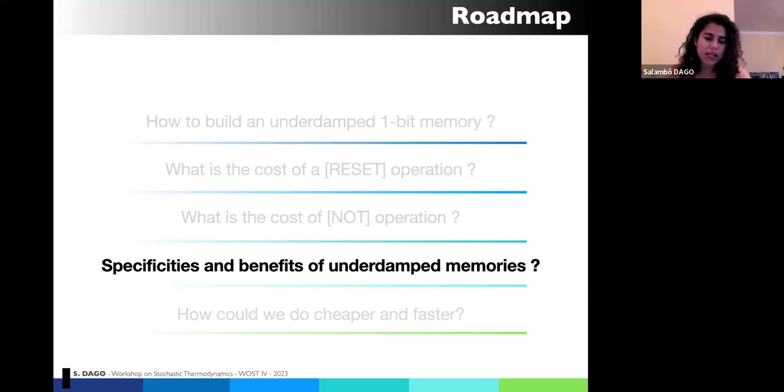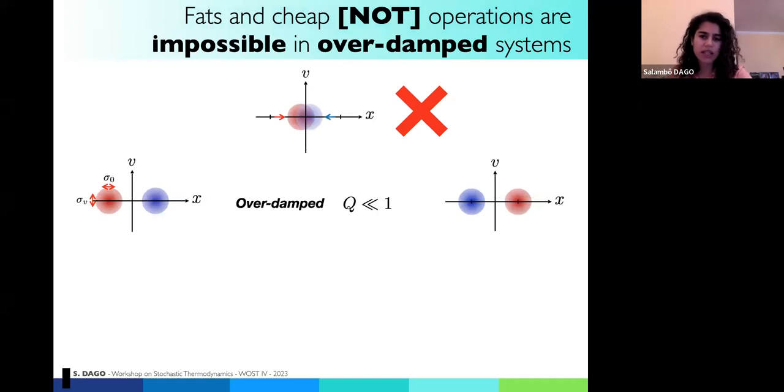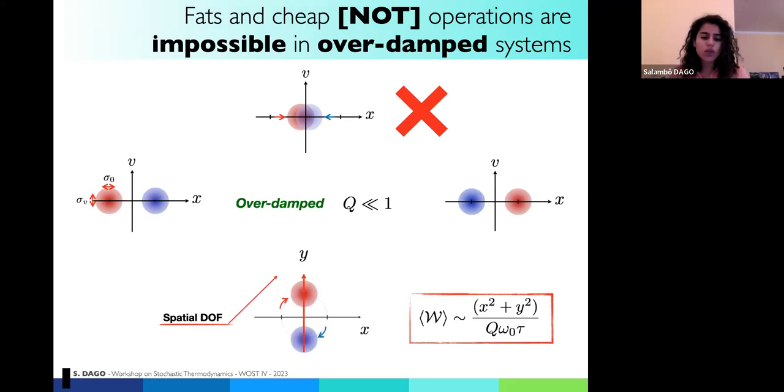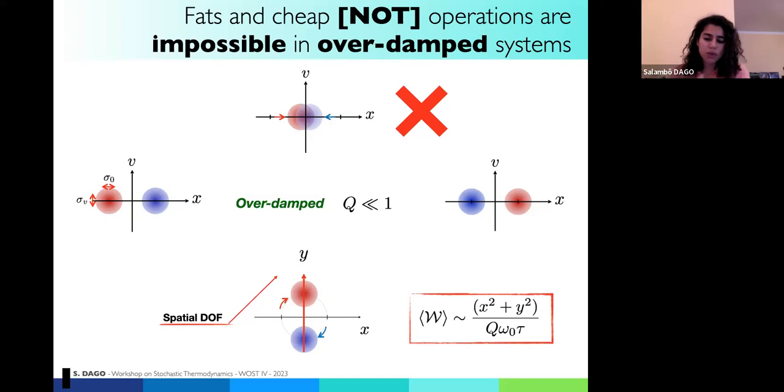And I will shortly explain, to my opinion, what are the big specificities and benefits of using underdamped memory. First, as I said, we are able to perform fast, half a period, and cheap NOT operations. And I want to stress out that this couldn't be done in overdamped dynamics, because in Markovian dynamics, you cannot switch your two states using only one degree of freedom. So if you don't have the velocity degree of freedom, you cannot do it in overdamped dynamics. So one thing you could do is to use two spatial degrees of freedom and do the same circle around. But doing that, you will have to pay the price of dragging your system in the two dimension circle. And you have to do that super slowly. So just to conclude, it was much better in underdamped dynamics because we could go faster and cheaper.